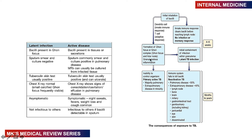If the immune response fails to control the infection within four to six weeks, primary active TB develops — pulmonary in the majority and extra-pulmonary in the minority, especially the immunocompromised. Latent TB can reactivate into reactivation TB — 55% pulmonary and 45% extra-pulmonary — over months to years. Extra-pulmonary reactivation can affect lymph nodes, bones, brain, miliary spread, the GIT, genitourinary tract, pericardium, eye, skin, or may be disseminated.